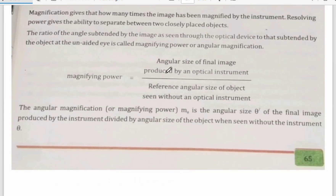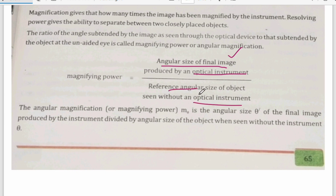You have to look at the angular size of the final image — the image made with the optical instrument. It is so big and so good. But with the naked eye, the size of that object — how are you seeing it? In comparison, that is what we call magnifying power.